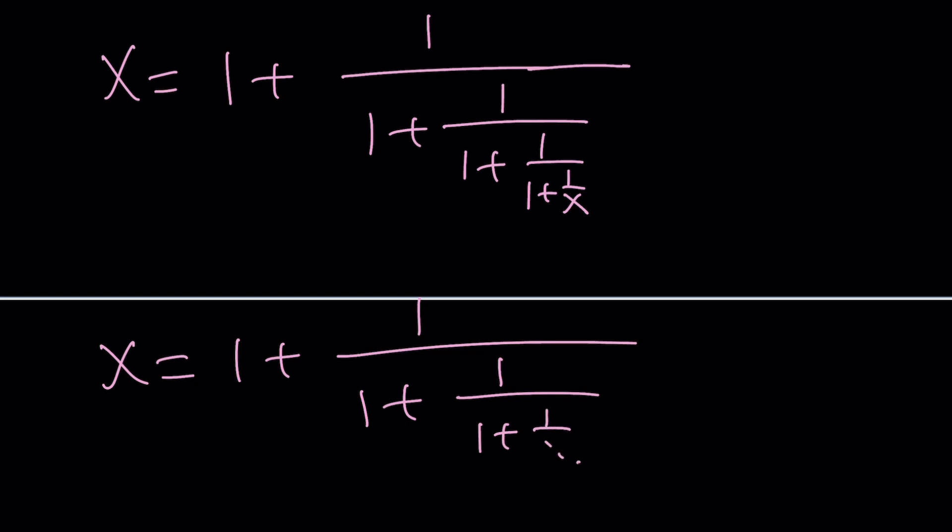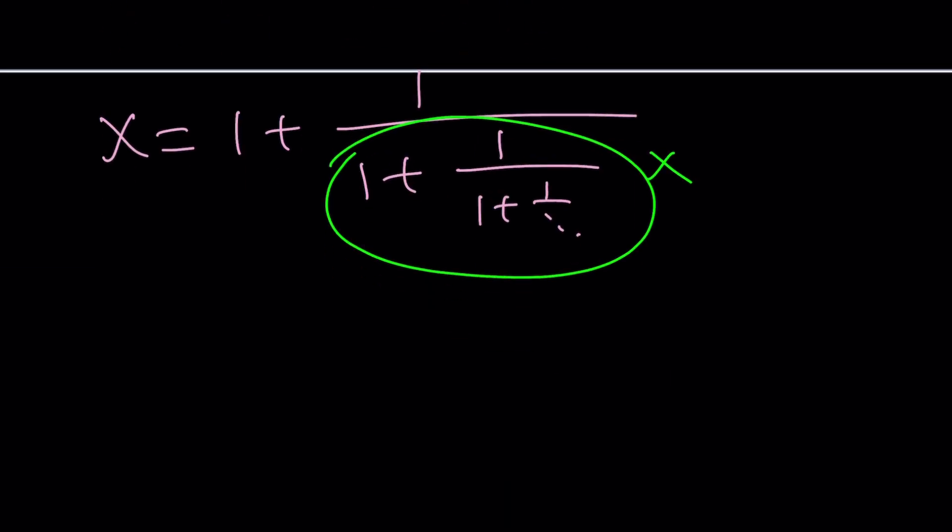And as you know, if you call this x, right? Again, the same idea. But this time, we can actually call a bigger piece x, which is interesting. And you would be getting 1 plus 1 over x. And then x equals that. And by multiplying everything by x, x squared equals x plus 1. And you get the exact same equation.